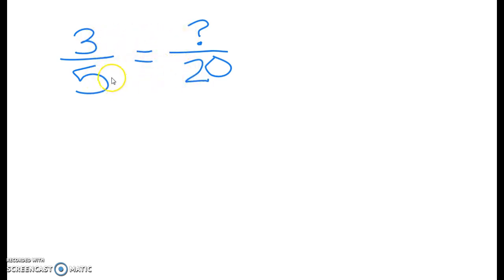So to get 5 into 20, you obviously multiply 5 by 4. That equals 20. To get your numerator, you'll do the exact same thing. 3 times 4 equals 12. So our answer is 12